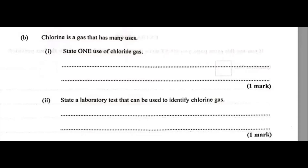Chlorine is a gas that has many uses. Part one: state one use of chlorine gas. Chlorine is used in the treatment of drinking water. It is also used in insecticides.